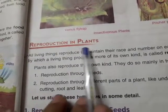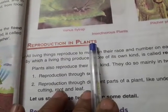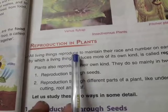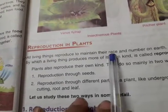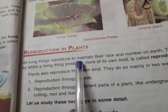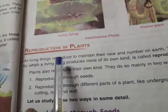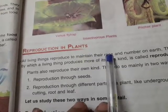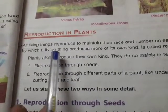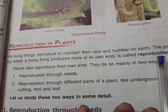There is another process which involves living things, and that is called reproduction. All living things produce their own kind to maintain their race and number on the earth. The process by which a living thing produces more of its own kind is called reproduction.